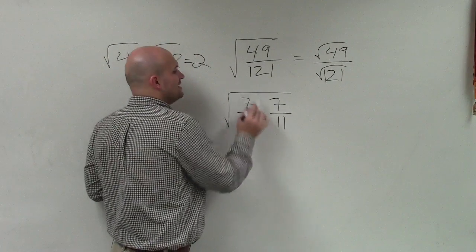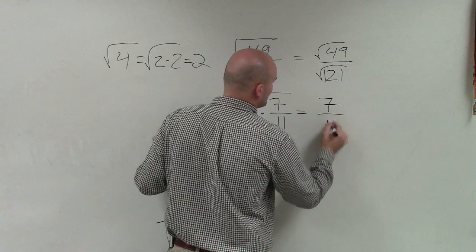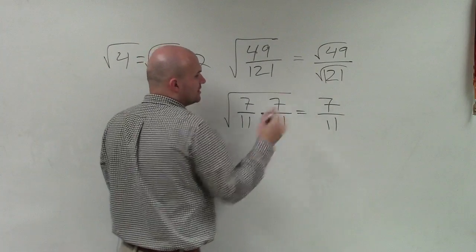So therefore, you can see these fractions are identical. Therefore, the answer is 7 elevenths, which if you did it this way, the square root of 49 is 7, the square root of 121 is 11.